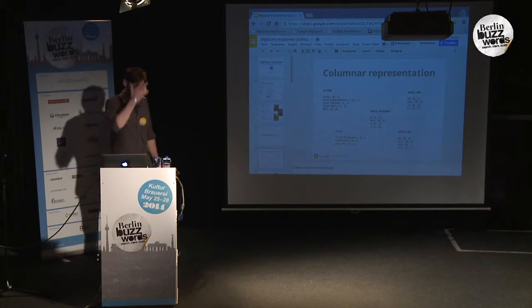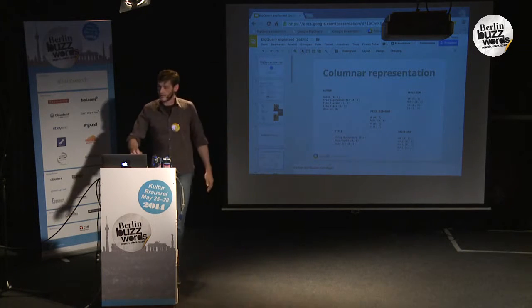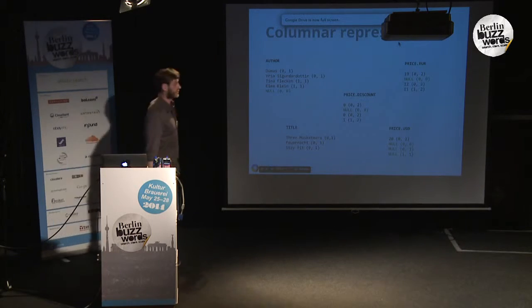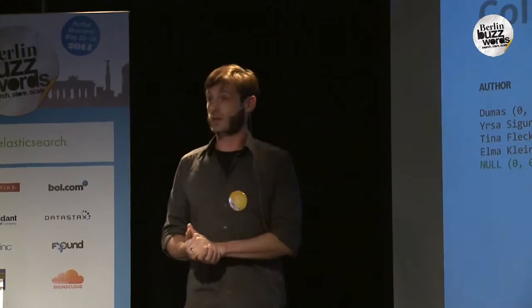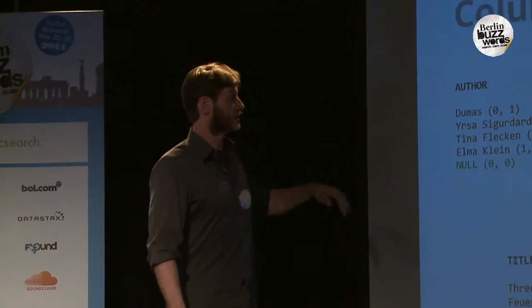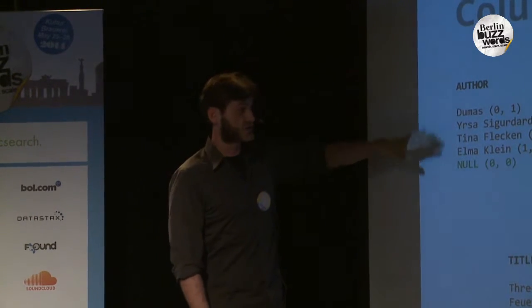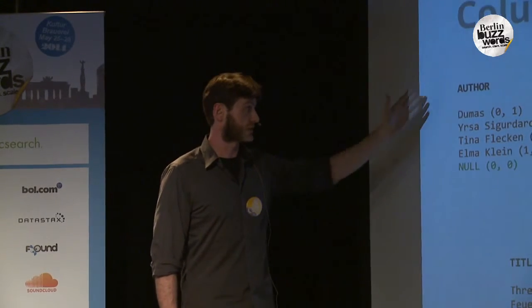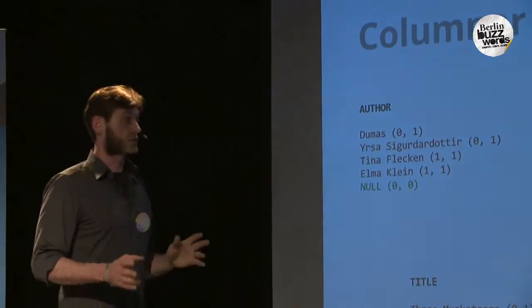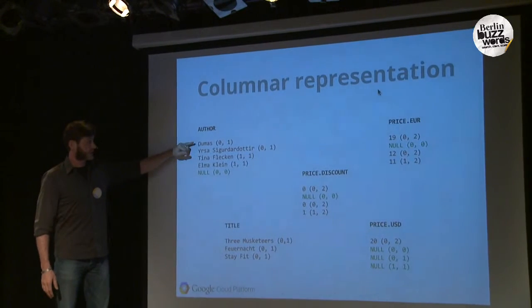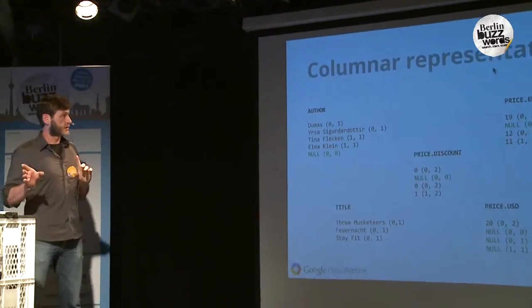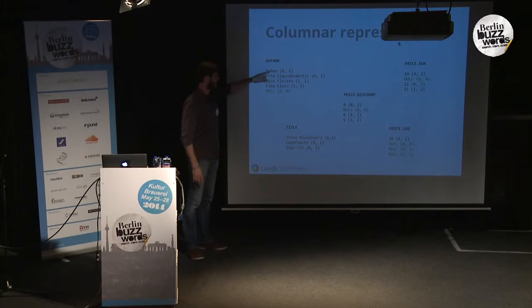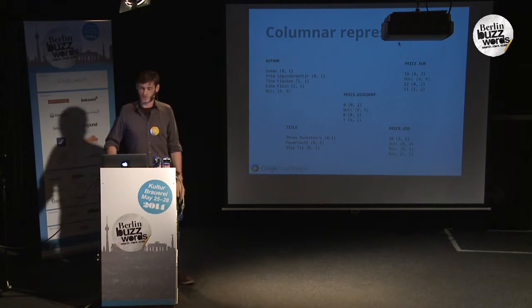Remember the books I mentioned? There are three books with authors and titles attached. The very first trick BigQuery does is change the representation of that data from a row-based representation to a column-based representation. Instead of having all those rows with all data in them, it stores the data efficiently in columns — an author column, a title column, a price column, price.euro, price.usd, and so on. Just ignore the numbers in parentheses for now — those are the magic that makes BigQuery work.